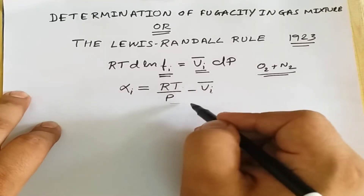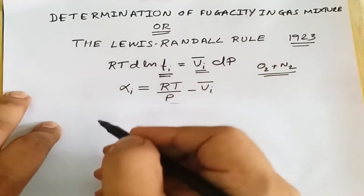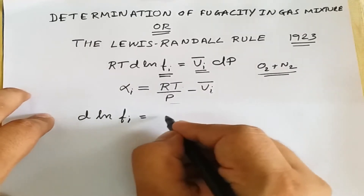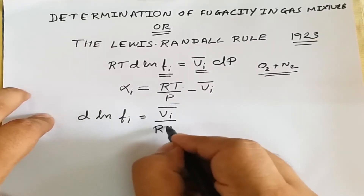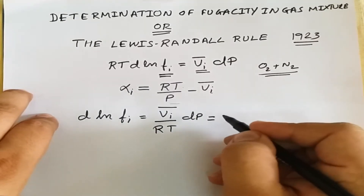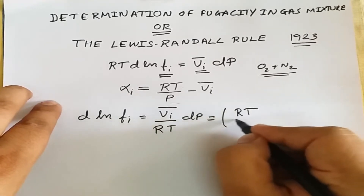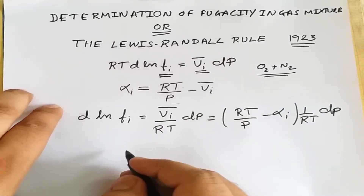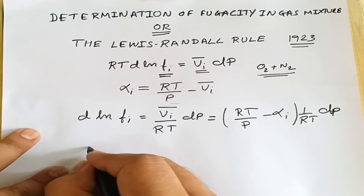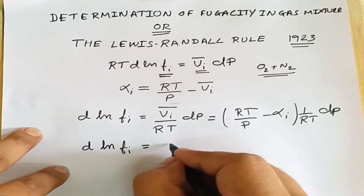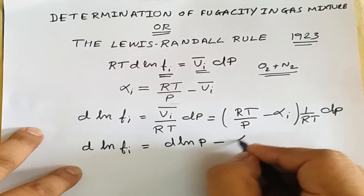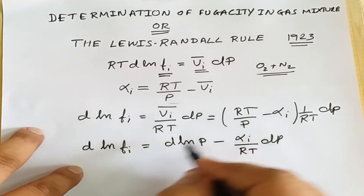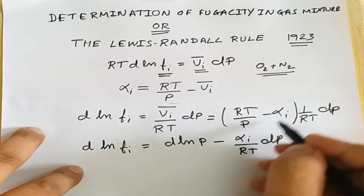We can rearrange this equation and substitute into the above equation. So d(ln f_i) = v_i_bar/RT · dp, which can be rewritten as (RT/p − α_i) · (1/RT) dp. Simplifying further, d(ln f_i) = d(ln p) − (α_i/RT) dp.